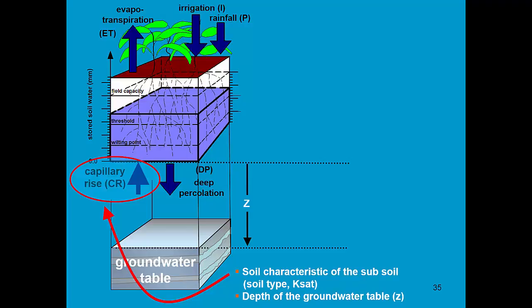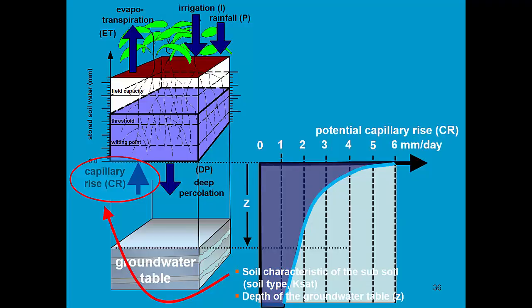For the specific soil, AquaCrop will select the curve. The shape of that curve is determined by the soil type and Ksat. It shows the potential capillary rise for various depths of the groundwater table.